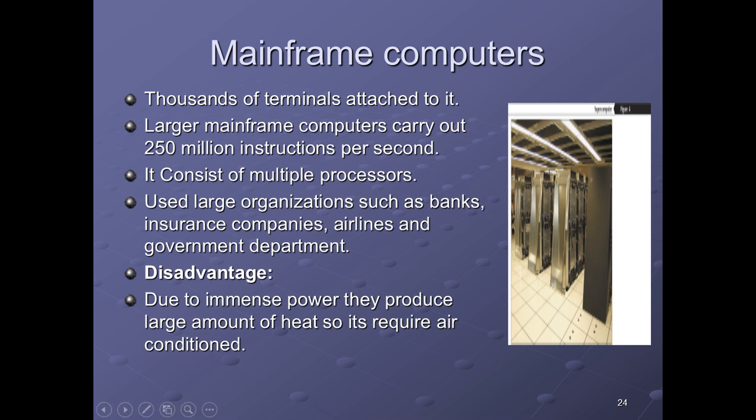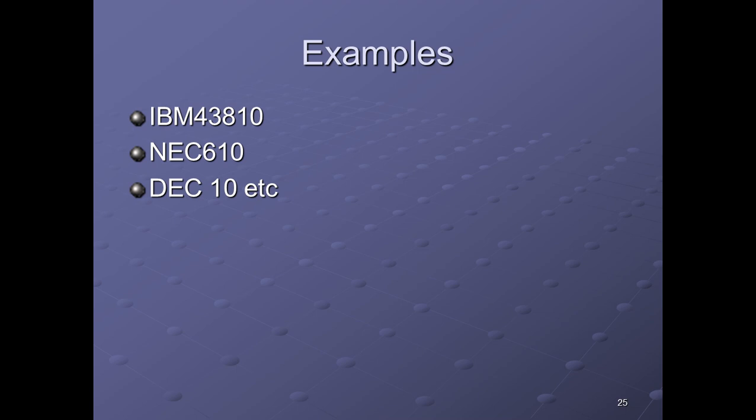A disadvantage of mainframe computers is that due to their immense power, they produce a large amount of heat, so they require air conditioning. When companies or banks use these computers, a lot of heat is produced. Examples include IBM 4381, NAS 610, and DAS 10.